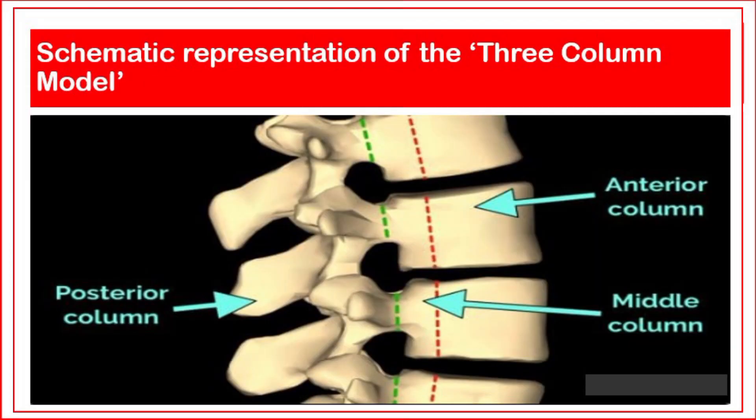Pathology — Three-column model: The anterior column involves the anterior two-thirds of the vertebral body, intervertebral disc, and the anterior longitudinal ligament. The middle column involves the posterior aspect of the vertebral body, intervertebral disc, and the posterior longitudinal ligament. The posterior column involves the posterior elements including the lamina, facet joints, spinous processes, and the associated ligaments.